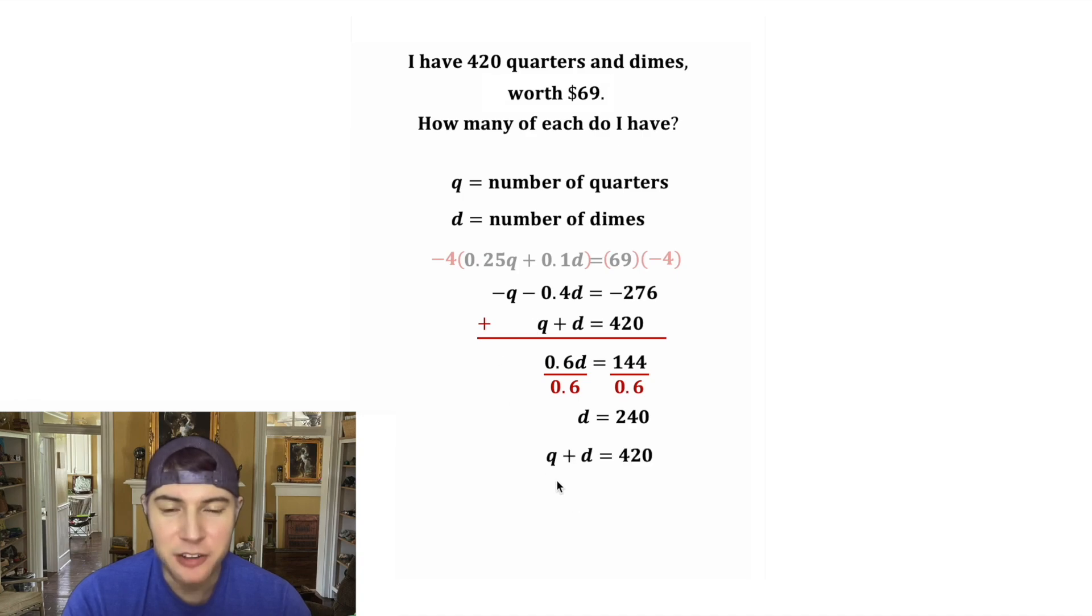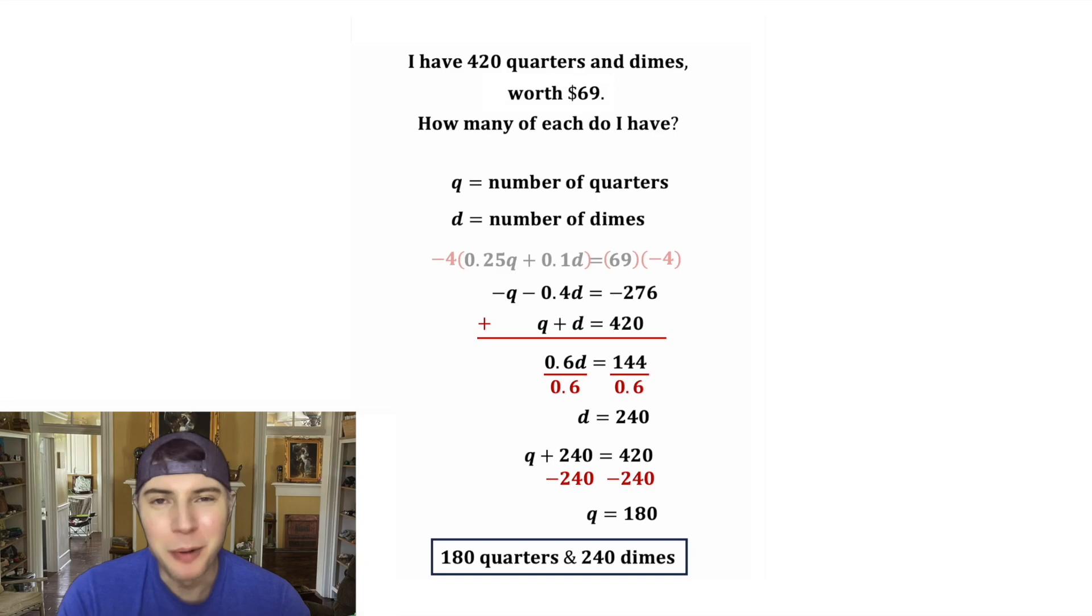Now let's copy this equation down. The Q plus D equals 420. And since we know D is equal to 240, let's plug in 240 for this D. After we subtract 240 from both sides, we get Q is equal to 180. So we know that we have 180 quarters and 240 dimes, and we could put a box around that.